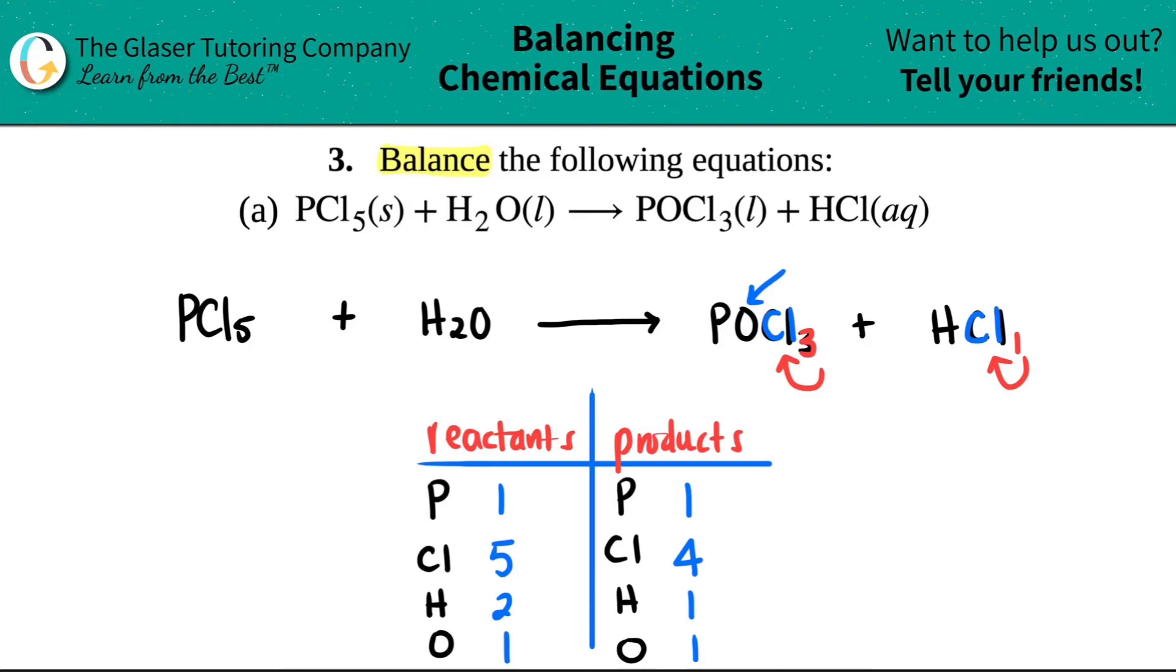Now it's easy to see what we need to balance. As of right now, the phosphorus looks balanced—one for one. The chlorine, not really—five and four. The hydrogen, not balanced, but the oxygens are balanced.